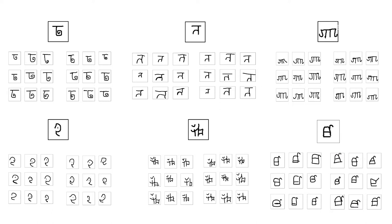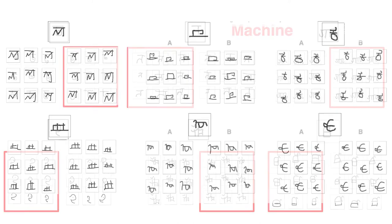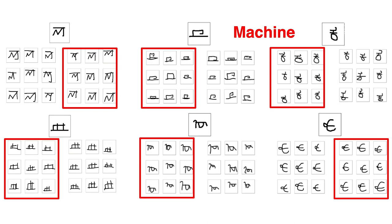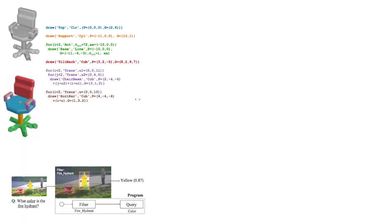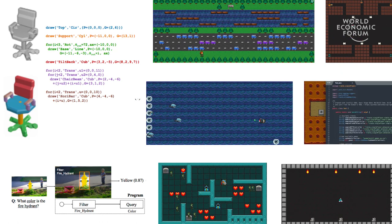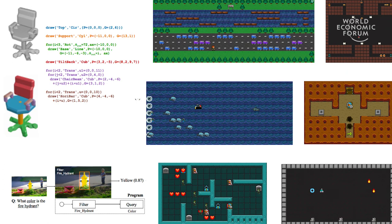This lets our system generalize from a single example and even pass a very simple kind of Turing test. We can show one example of a new concept to both humans and machines and say, imagine new ones — draw new instances of that concept. Can you tell the difference between the human and machine? My bet is that you couldn't. Now this is just one small step towards more human-like machine learning, but it scales. We can learn programs that capture the concept of a chair, that can answer questions about pictures, and that can even learn to play a new video game a hundred or a thousand times faster than today's deep reinforcement learning, and almost as fast as a person.